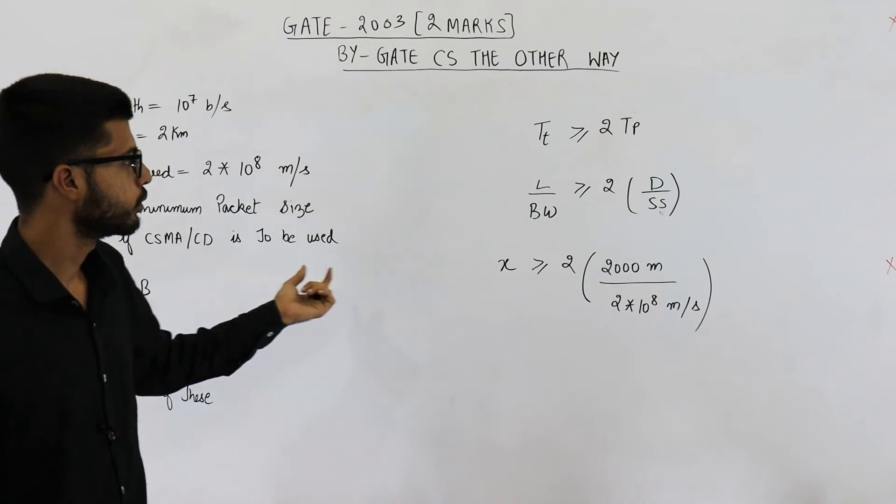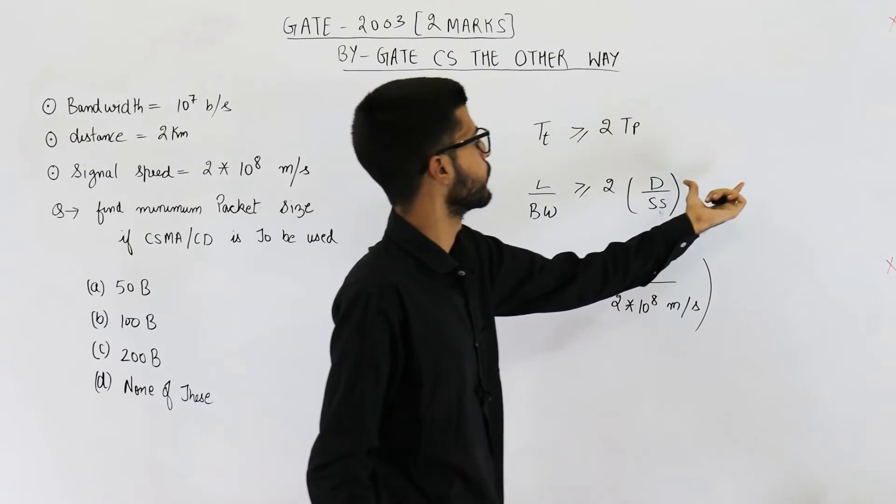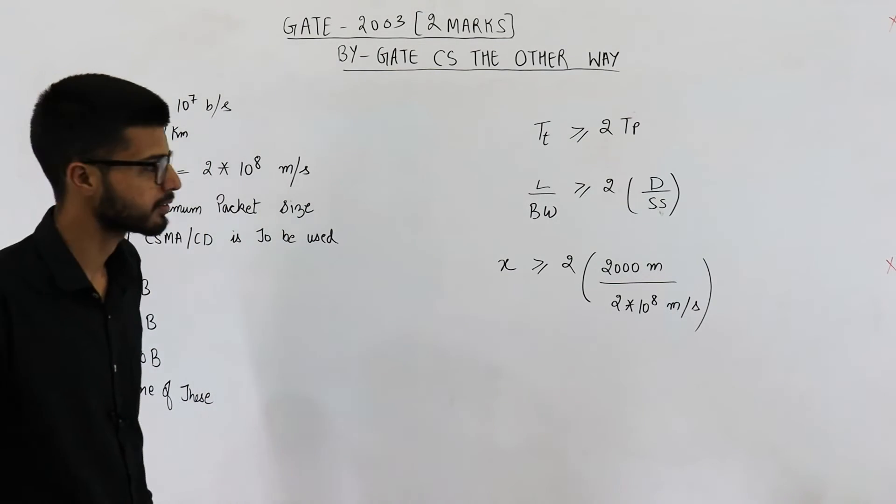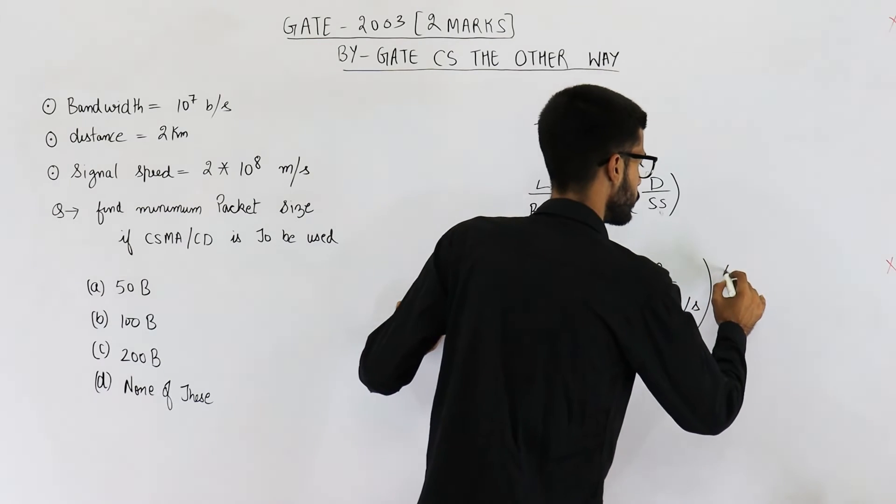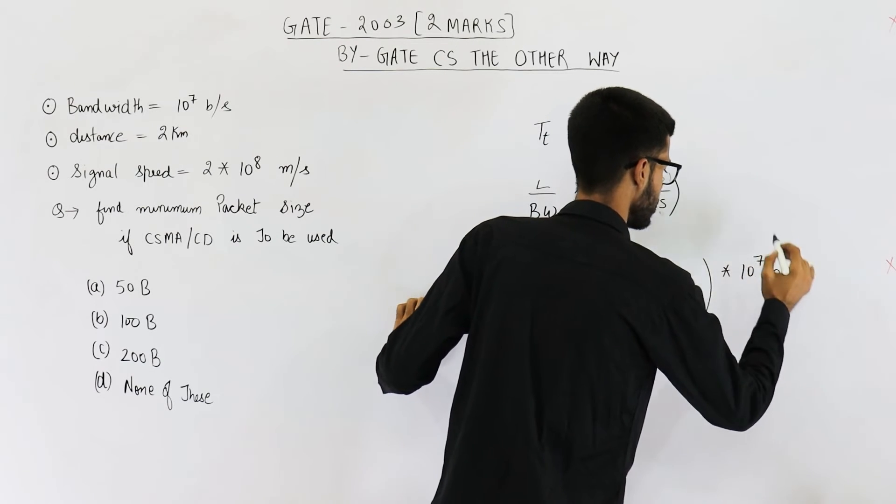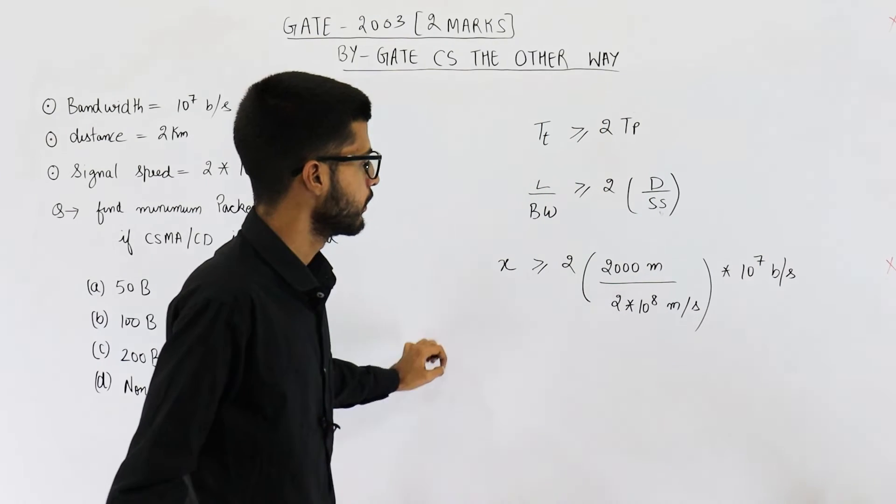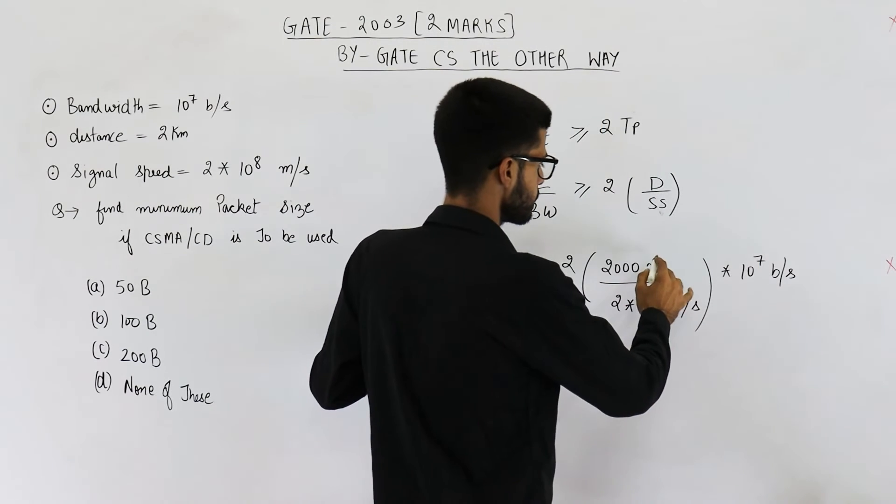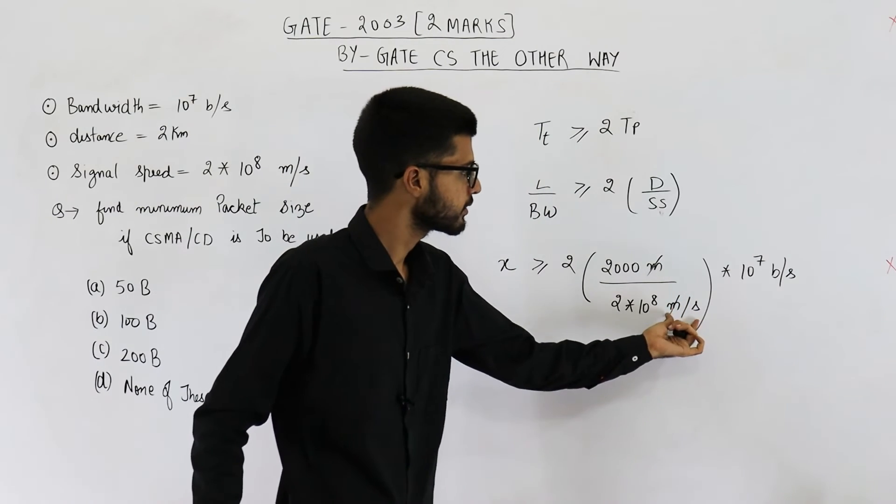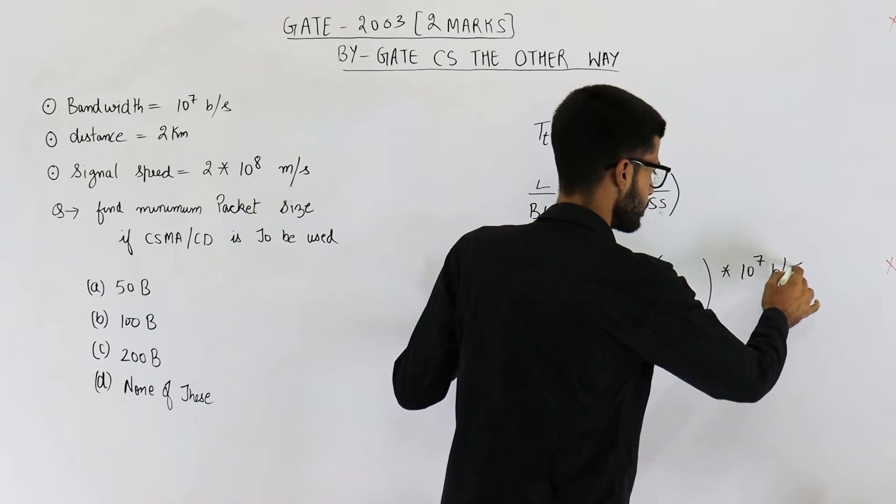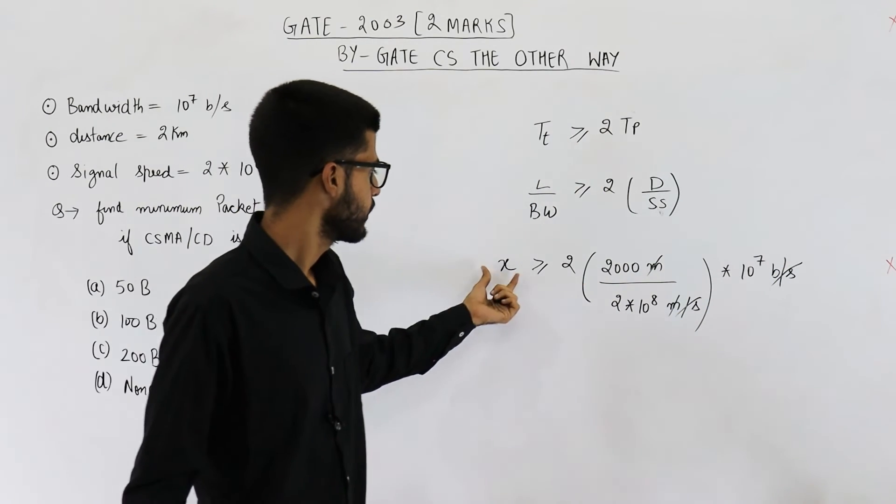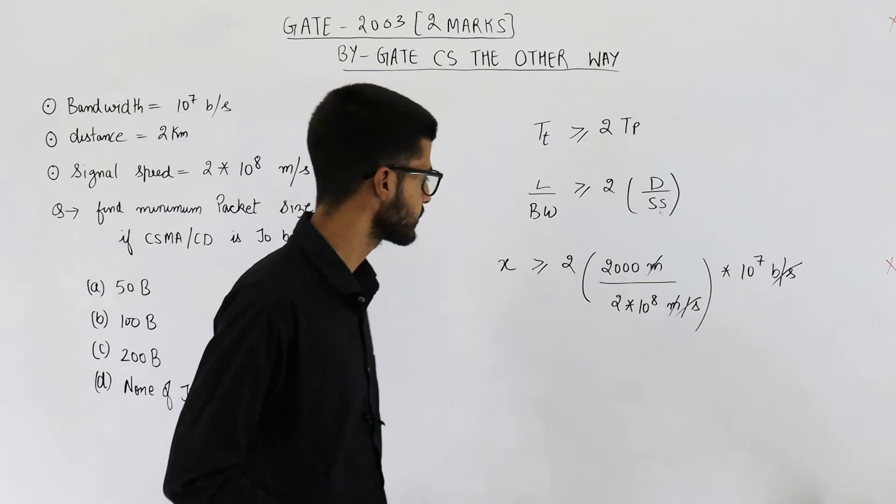And we need to multiply it by the bandwidth. So bandwidth given in question is 10 raised to the power 7 bits per second. Into 10 raised to the power 7 bits per second. So this is meter and this is also meter. They will get cancelled. Per second and per second will get cancelled. So the unit that is left is bits. X is these many bits. Let's calculate it.